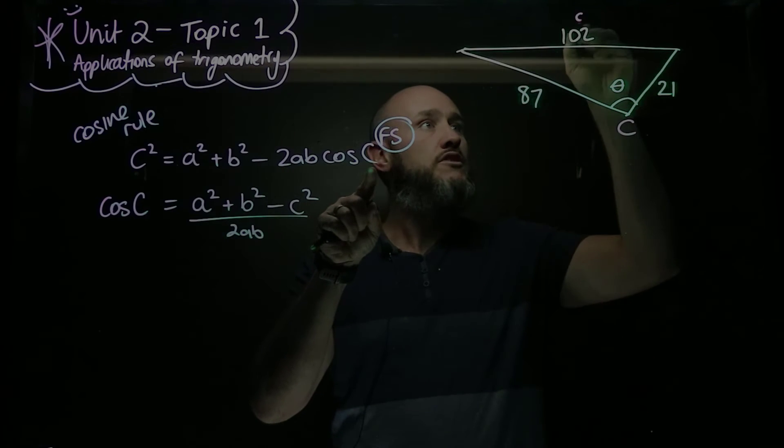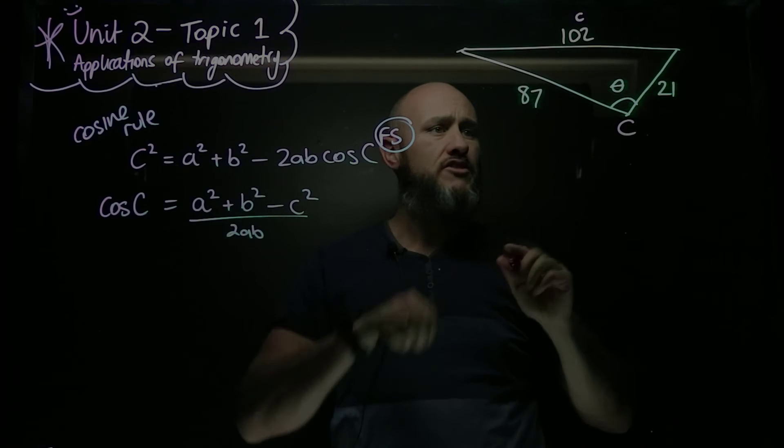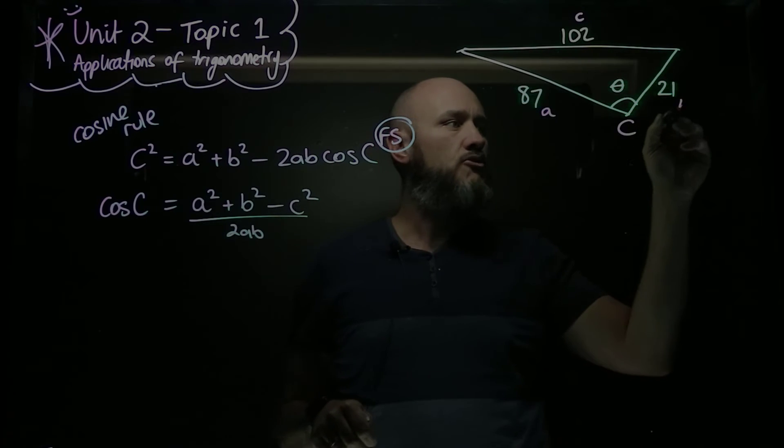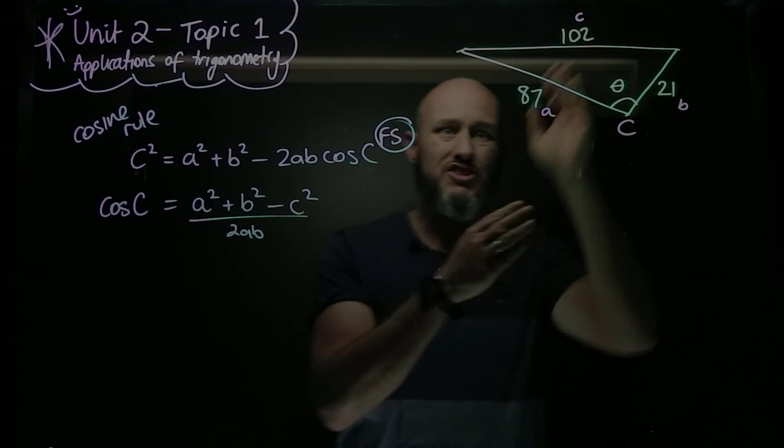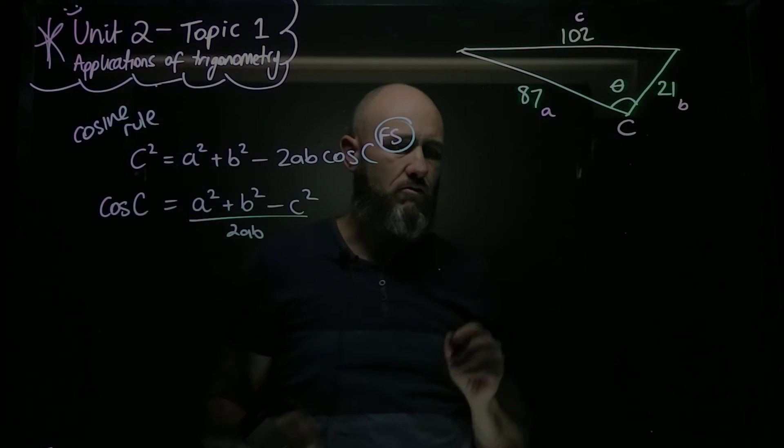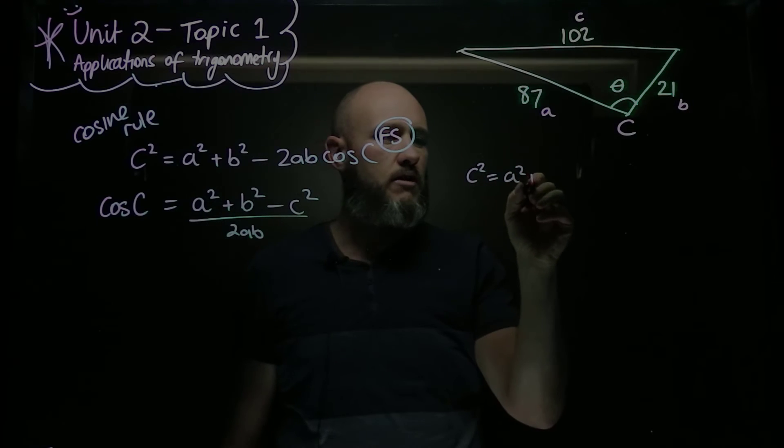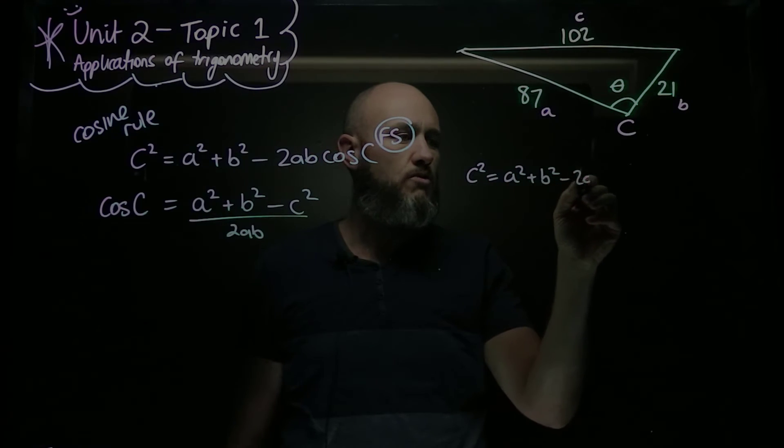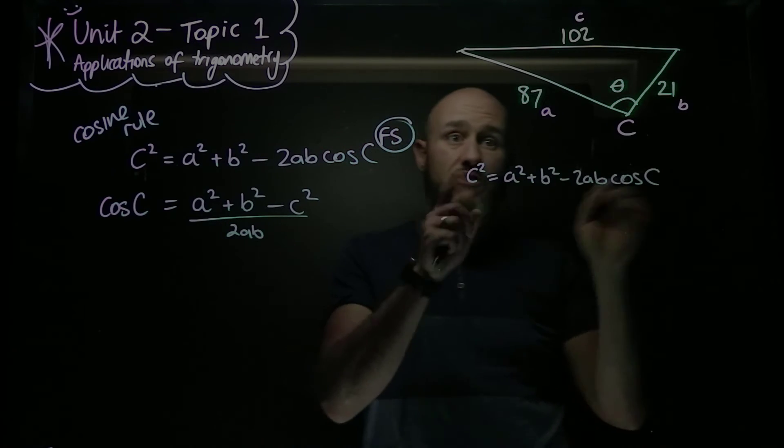But first I'm going to label my diagram, which you should always do. We're trying to find a missing angle, so we'll call this C. And therefore this is little c. Just make sure that I get my a's, b's and c's right. Now a and b are arbitrary, the order you pick them in. a, b or b, a, it doesn't matter. But c is important. It has to be opposite the angle. So I get c squared equals a squared plus b squared minus 2ab cos C. And I've got a choice.